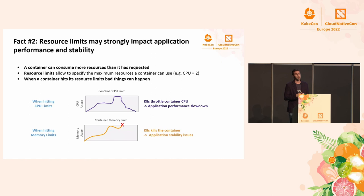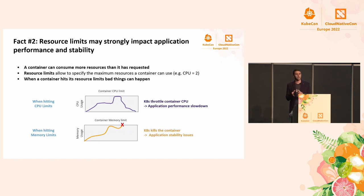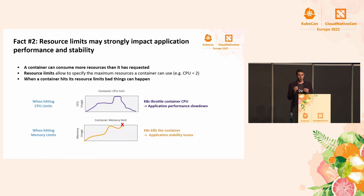The second important concept is resource limits. Resource requests are the guaranteed resources a container will get, but usage can be higher. Resource limits define the maximum amount of resources a container can use, like two CPUs or one gigabyte of memory. But what happens when resource usage hits the limit? Kubernetes treats CPU and memory differently. When CPU usage approaches the limit, the container gets throttled — the CPU is artificially restricted, which can result in application performance issues. When memory usage hits the limit, the container could get terminated — there's no slowdown due to paging or swapping. Your pod will simply disappear, and you may face serious application stability issues.